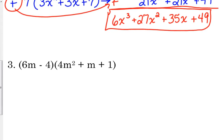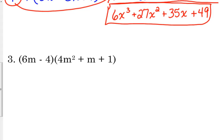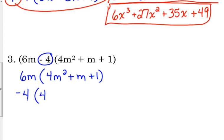So let's look at number 3. I'm going to do the same thing with number 3. We're going to break it up. So 6m times our trinomial, 4m squared plus m plus 1. And be careful, that's a negative 4 times 4m squared plus m plus 1.